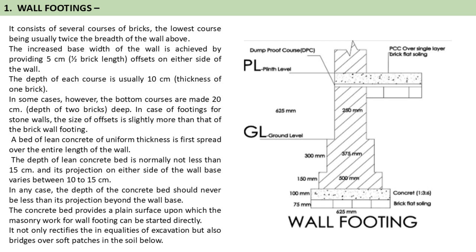The concrete bed provides a plain surface upon which the masonry work or wall footing can be started directly. It not only rectifies the inequalities of excavation but also bridges over soft patches in the soil below. As you can see in the picture, we have flat brick, then concrete laid out, and then the brickwork below the ground level which is double the column above ground level — 500 mm below ground level and then the column gets 250 mm. Then at plinth level we have the PCC bed and damp proof course, and the column continues.